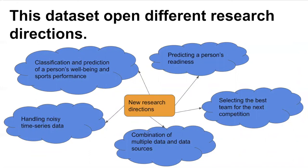This dataset enables various sport science research directions. If we want to find the best team for the next competition, we can do research to find what the main dependent factor is for that selection. Moreover, we can do research to find vast correlations of parameters based on multiple data sources from this dataset.